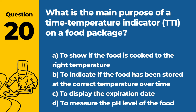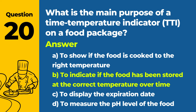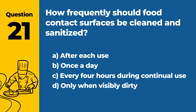Question 20: What is the main purpose of a time temperature indicator (TTI) on a food package? A. To show if the food is cooked to the right temperature. B. To indicate if the food has been stored at the correct temperature over time. C. To display the expiration date. D. To measure the pH level of the food. Answer: B. To indicate if the food has been stored at the correct temperature over time. A time temperature indicator on a food package is used to indicate whether the food has been kept at the appropriate temperature throughout its storage and transportation.